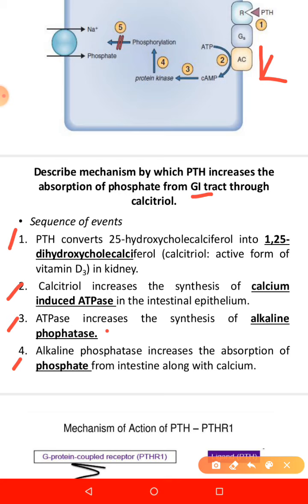Regarding alkaline phosphatase, it is present in the liver, bone, intestine, and placenta — mainly in the biliary tract epithelium of the liver. It can be used as a marker of obstruction of the biliary system. Alkaline phosphatase is important for the mineralization of bone and represents a useful biochemical marker for bone formation. Osteoblasts express the bone or tissue non-specific isoform of alkaline phosphatase.